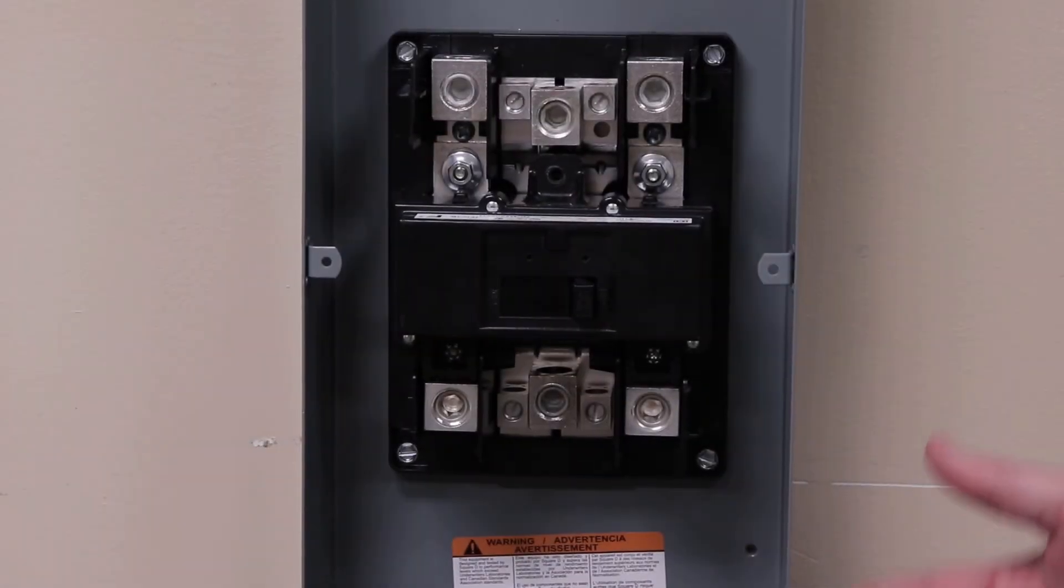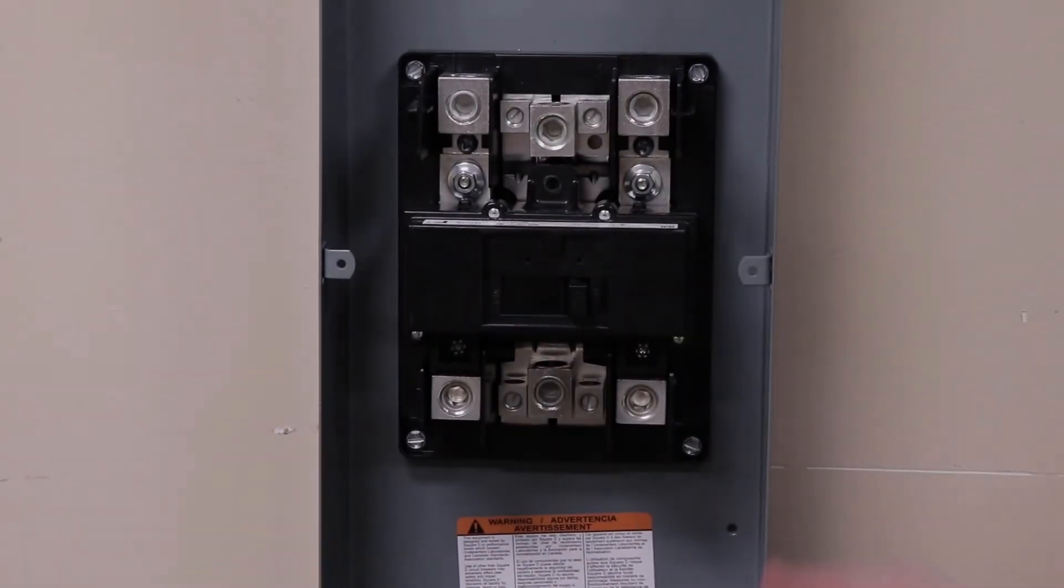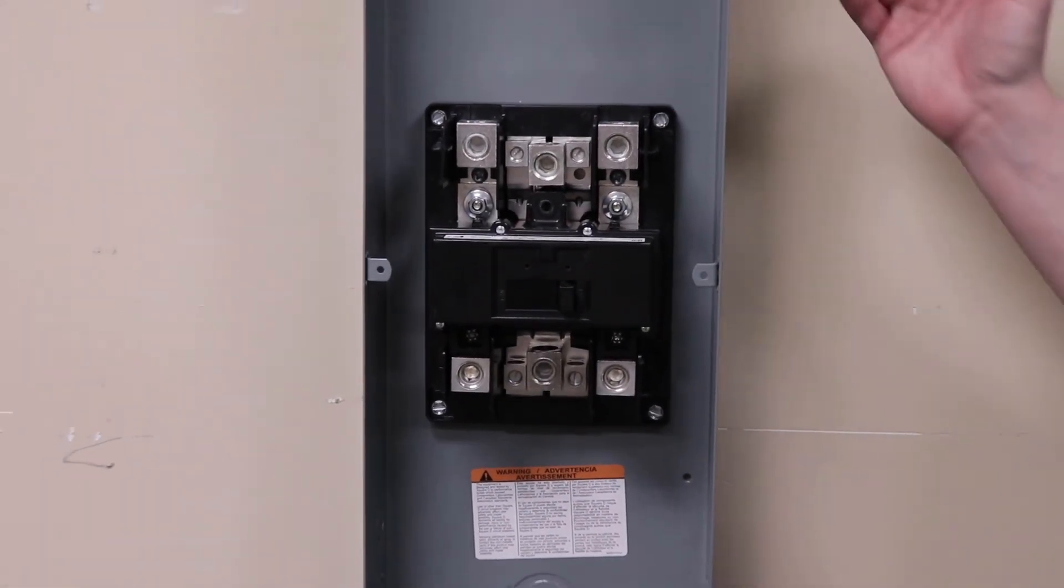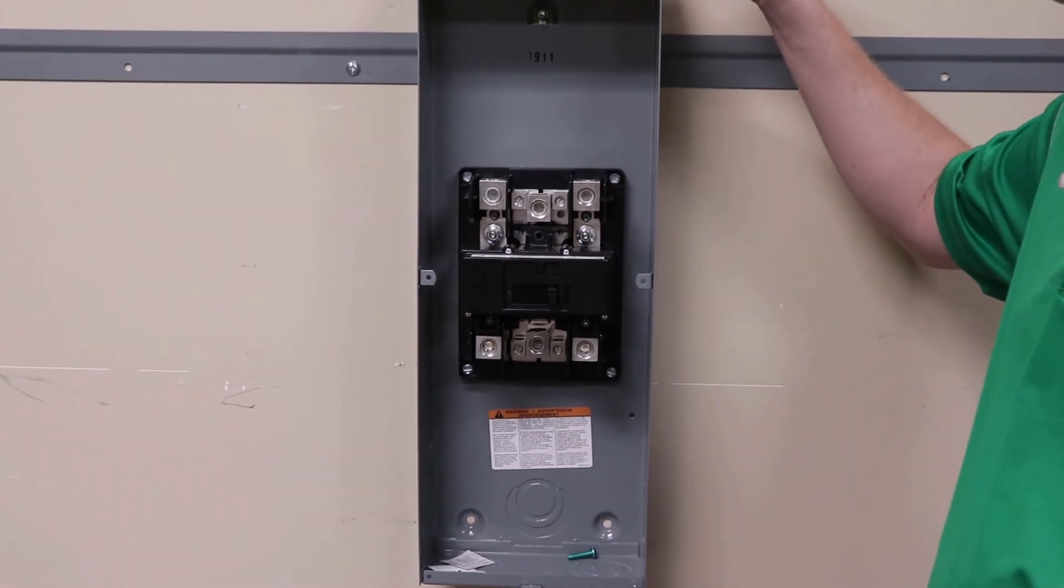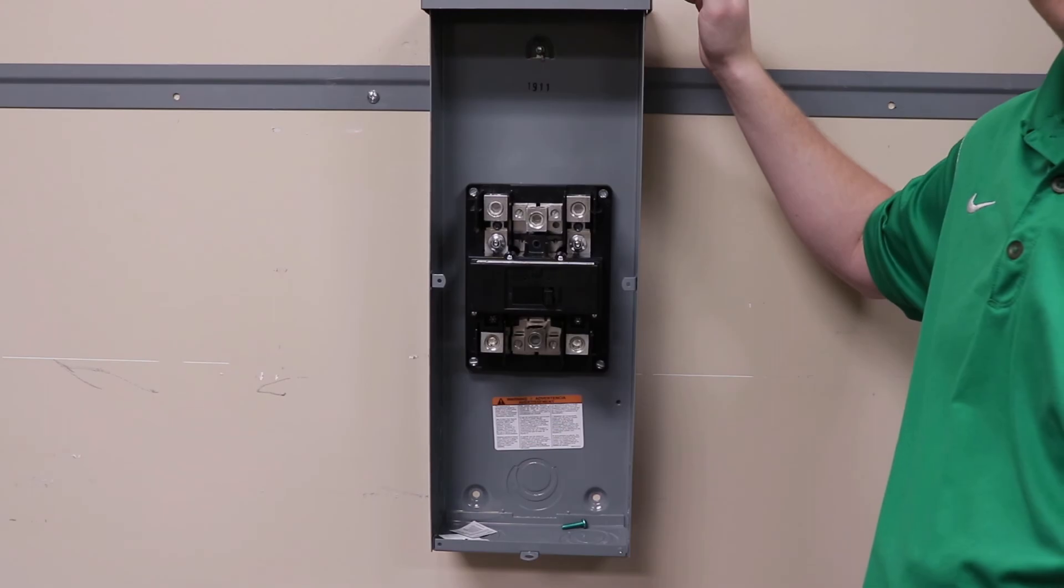There are no line or load markings anywhere on the enclosure or the wiring diagram, so you can come in with your source in either the bottom or from the top and take your load out of the opposite end.